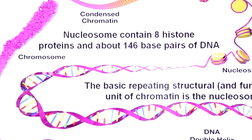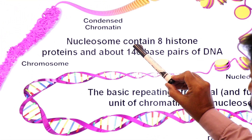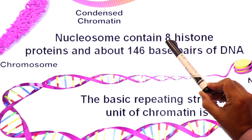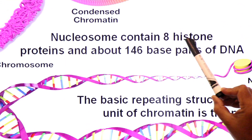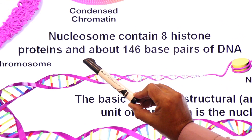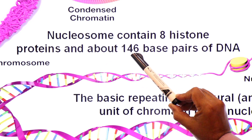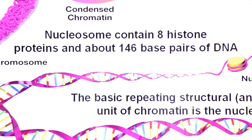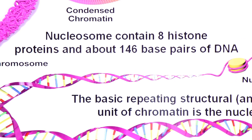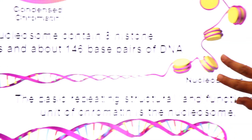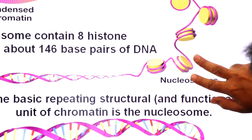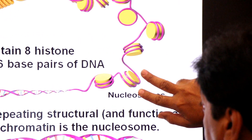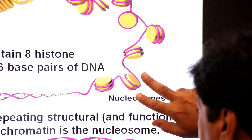What is a nucleosome? A nucleosome contains eight histone proteins and about 146 base pairs of DNA — that is, two turns of DNA around eight histones, called one nucleosome.